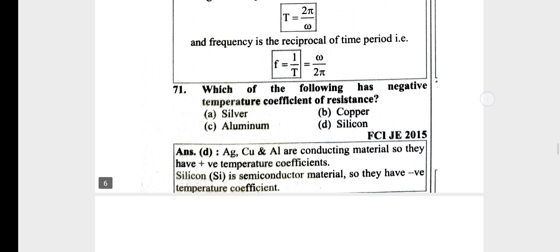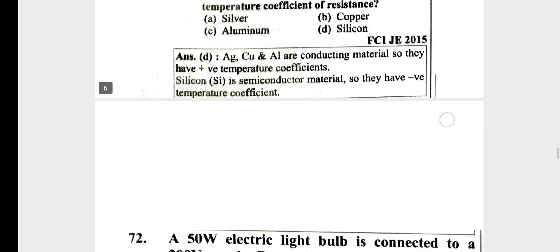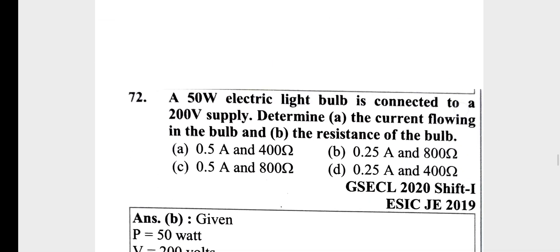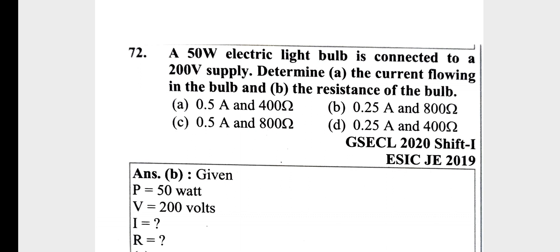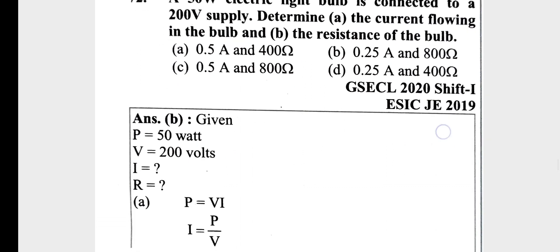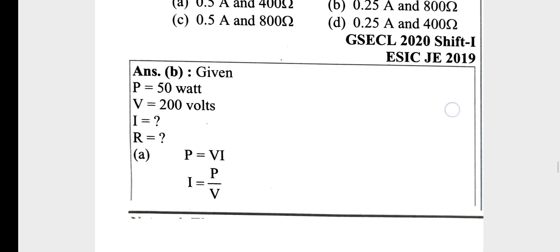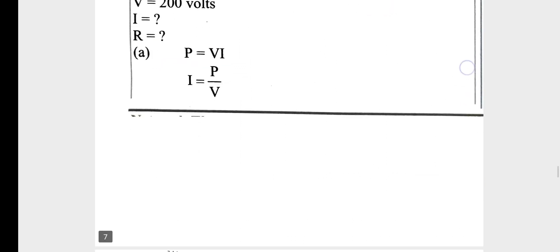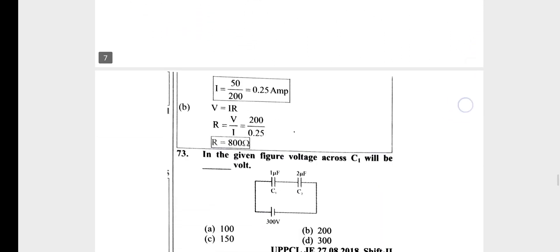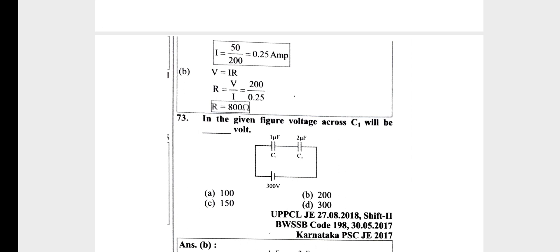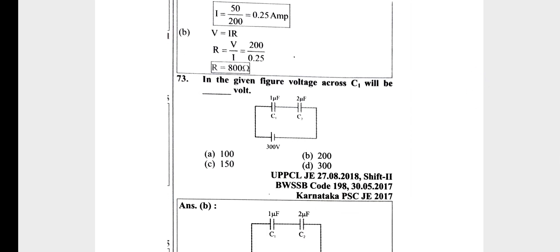Silicon has a negative temperature coefficient. A 50 watt electric light bulb is connected to 200 Ohm — determine current and resistance. Power equals P equals VI, and the formula is I² R, with V equal to IR. These are straightforward questions using the power formulas.